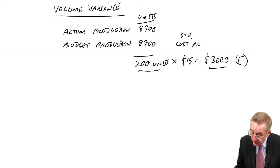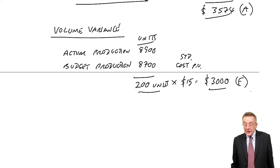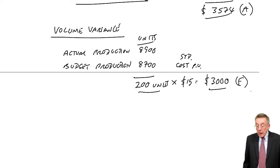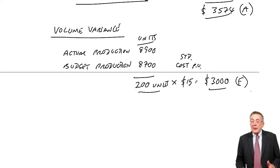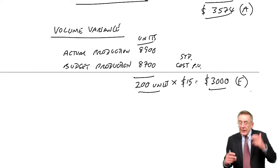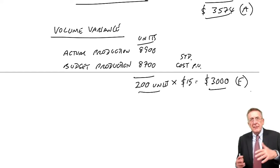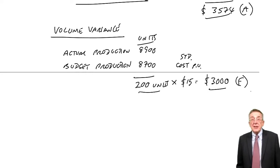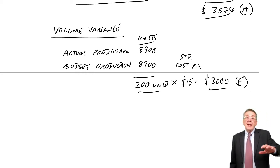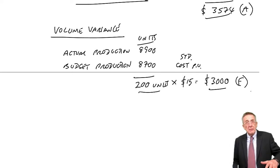Before I carry on, just one thing about that volume variance. It's easy to learn a rule and get the figure of 3,000. But of all the variances, this is the one that for most people, they then start scratching their heads about, oh, is it favourable? Is it adverse? All the others you can make silly mistakes on, but all the others, if you think it through, it's logical. You've spent more, adverse. You've spent less, favourable.